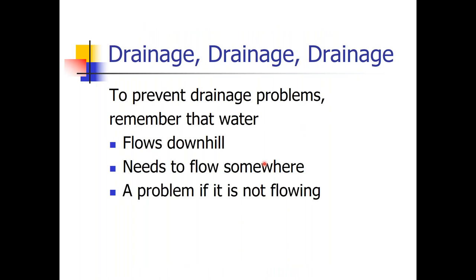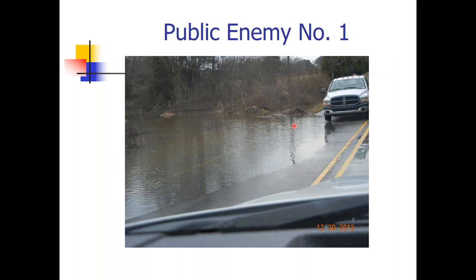To prevent drainage problems, there are a couple of things we have to establish early on. First, water flows downhill. Working in the field, I found that was often difficult for homeowners to understand — if their property was in a valley, water from uphill would run down onto theirs. Water does not flow uphill. The other thing is water is going to flow somewhere — it's just going to happen. And if it's not flowing, then we have major problems on our hands. Water is public enemy number one.